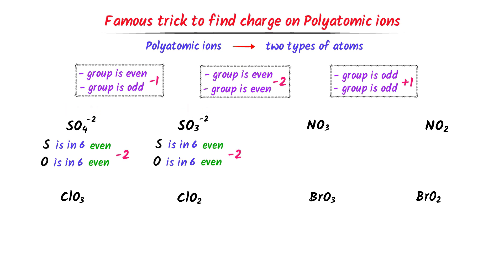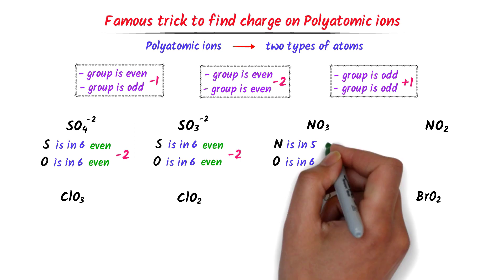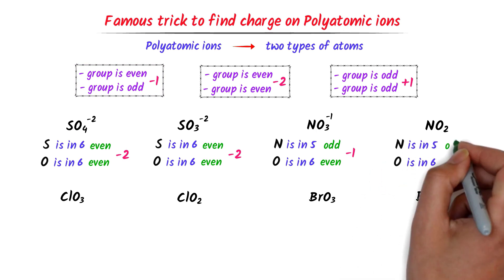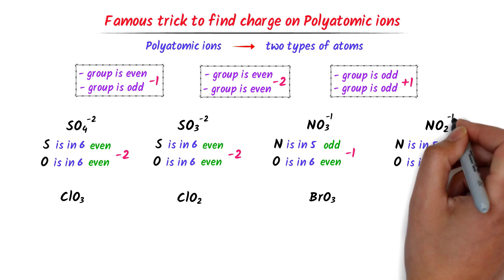In the case of nitrate ion, the group number of nitrogen is 5 and that of oxygen is 6. Five is an odd number and 6 is an even number. According to the given rule, if one is even and another is odd, the charge must be negative 1. Hence, the charge on nitrate ion is negative 1. Similarly, nitrite ion contains the same atoms — nitrogen and oxygen — so the charge on nitrite ion is also negative 1.